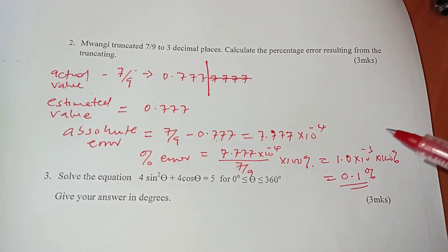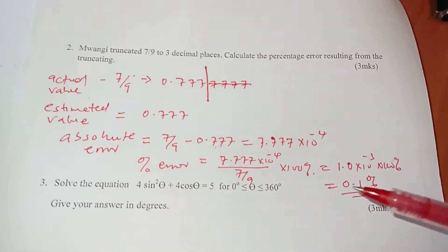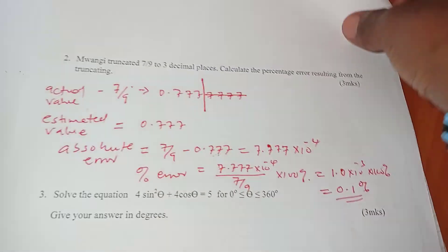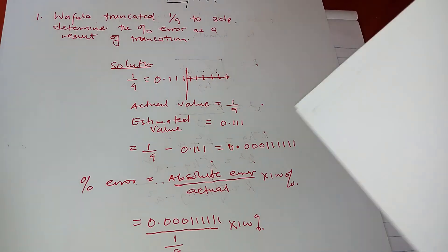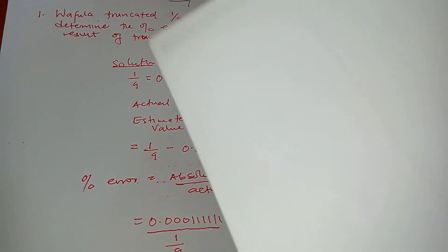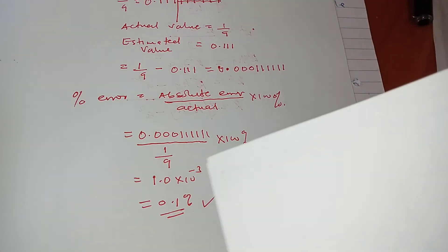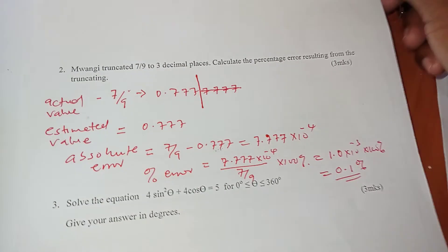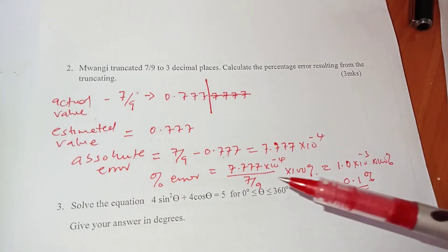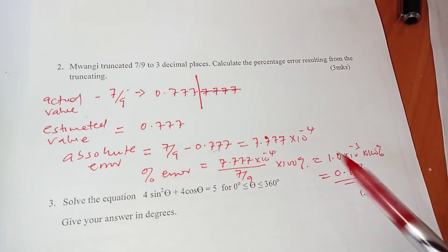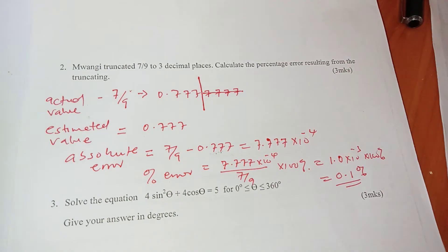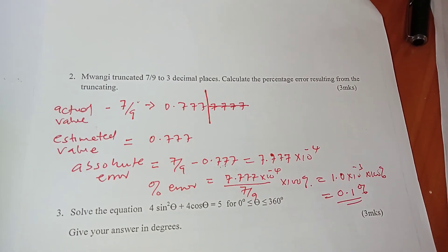So when you multiply by 100, what's our answer? Times 100 percent, so you get 0.1 percent. It's like we have the same answer we had in our previous example here when we were having somebody by the name of Fuller truncating one over nine to three decimal places and the error was still 0.1 percent. And here from Muangi who is a different person dealing with a different fraction but correct to the same decimal places, getting the same answer. And that's how it's done, thank you.